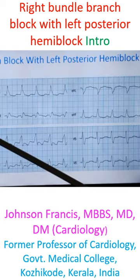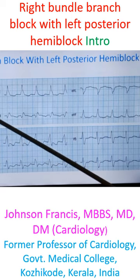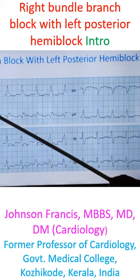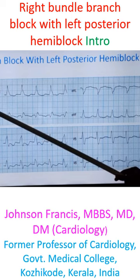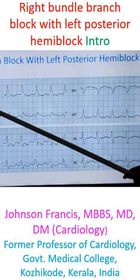This ECG is showing sinus rhythm. You can see P waves — T and P are almost merging together, but you can see the P wave here. This is the P wave, and the PR interval is on the upper limit, almost 200 ms.